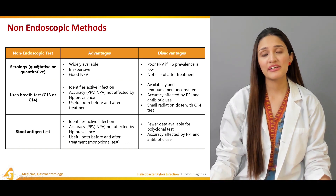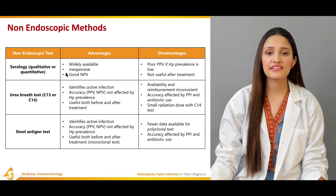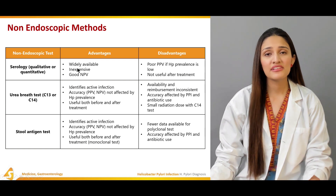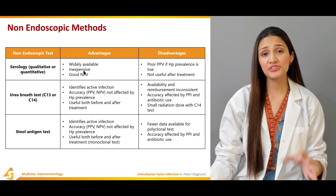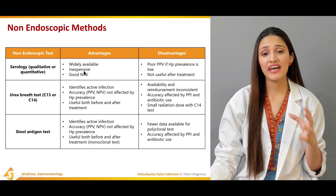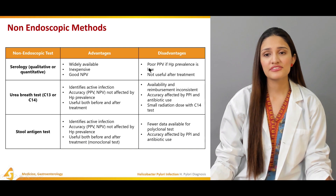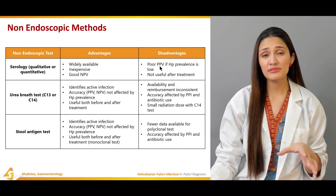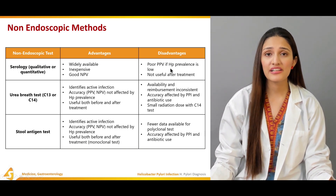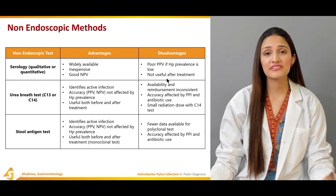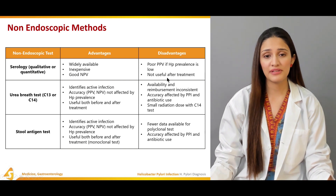The non-endoscopic methods include serology, which can be qualitative or quantitative. It is widely available in most clinics, inexpensive, and has a very good negative predictive value. The disadvantage is that it has a very poor positive predictive value if the prevalence of H. pylori infection is low, and it is not useful if a patient has already been treated for H. pylori infection.